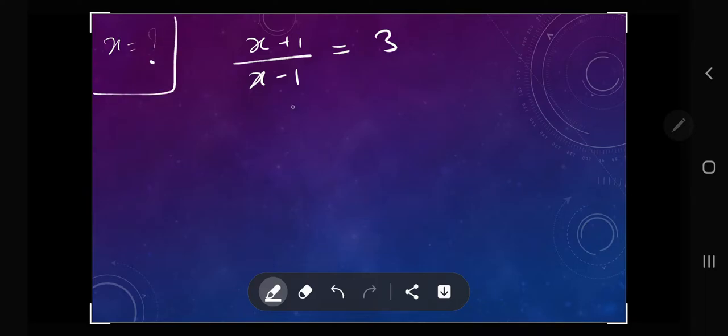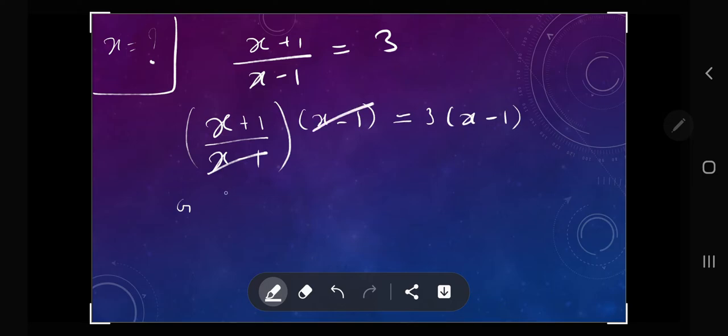Now all we need to do is multiply both sides with x minus 1. As you know, we can't just do an operation on the left hand side, we have to do it on both sides. So if I multiply the left hand side with x minus 1 and multiply the right with x minus 1 as well, which gives me these x minus 1 cancel, x plus 1 is equal to 3x minus 3.